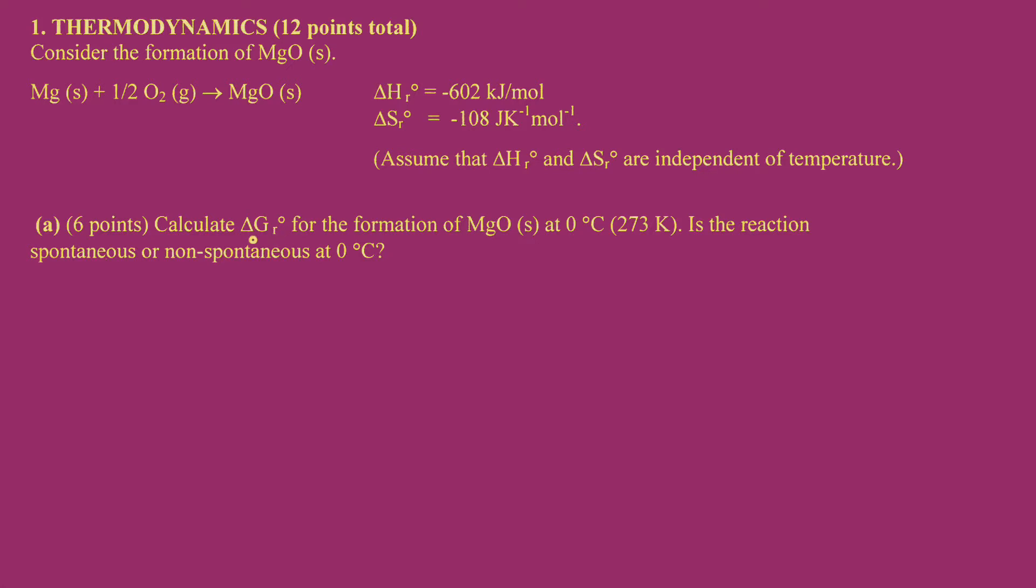Calculate ΔG° for this reaction, that is the standard Gibbs free energy change for the formation of MgO at 0 degree centigrade, that is 273 Kelvin. Next, is this reaction spontaneous or non-spontaneous at 0 degree centigrade? So we have to check also whether it is spontaneous or non-spontaneous.